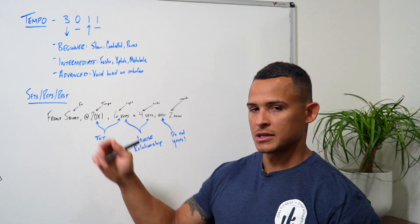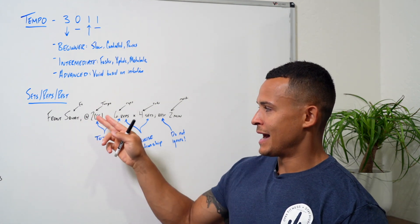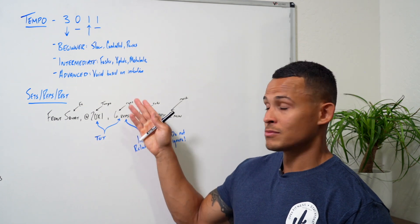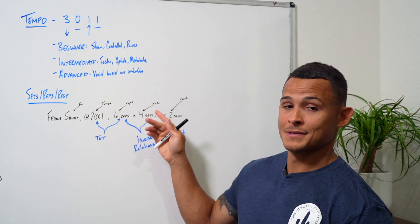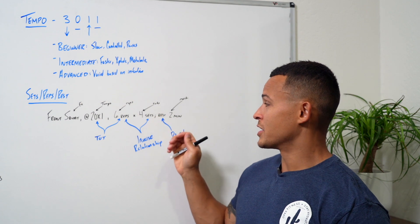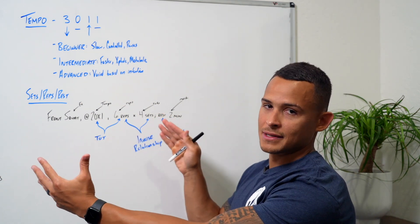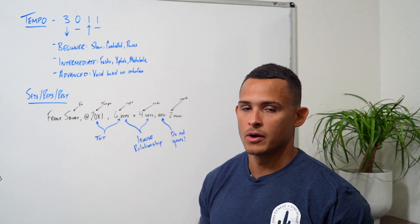comma, at 2-0-X-1, which is the tempo, comma, six reps, comma, four sets, semicolon; rest, two minutes. So that's how a resistance program is written here at OPEX.